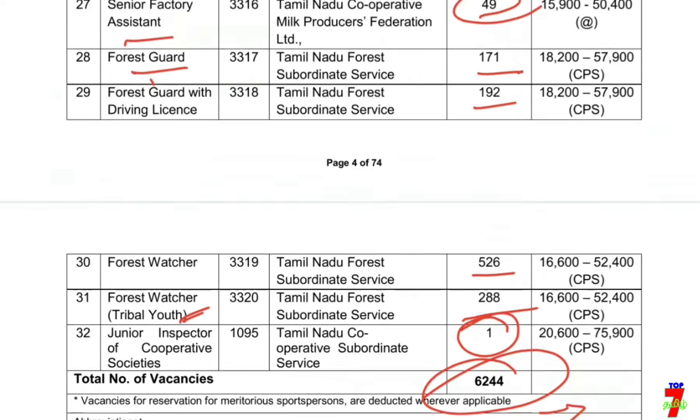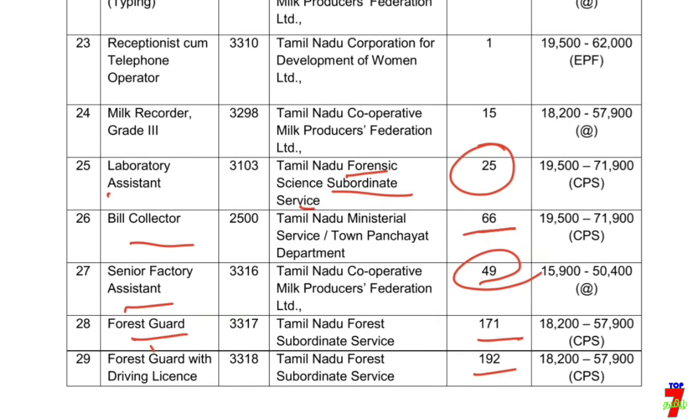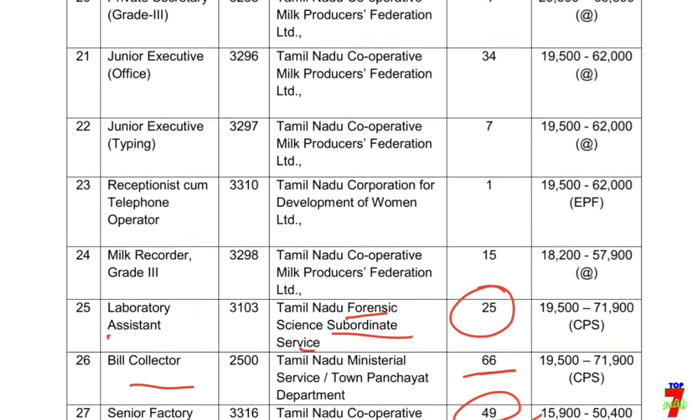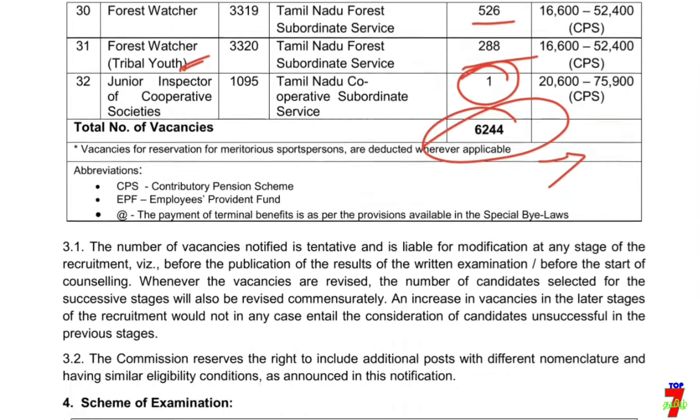The Forest Guard with Driving License is 365 vacant posts. The total number of vacancies is 644. Every department and every vacancy is eligible.